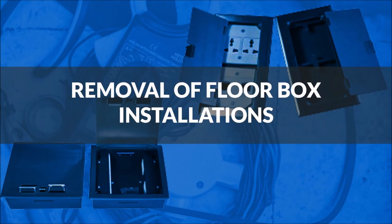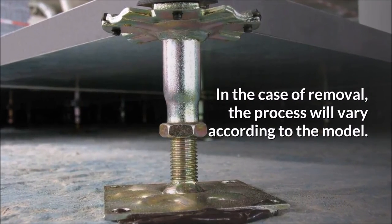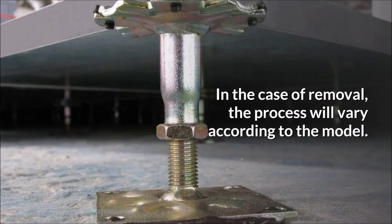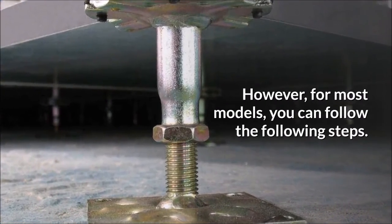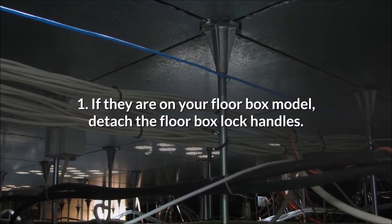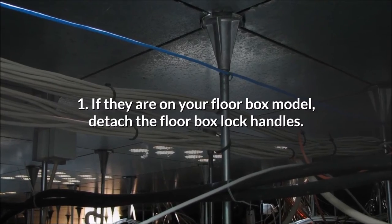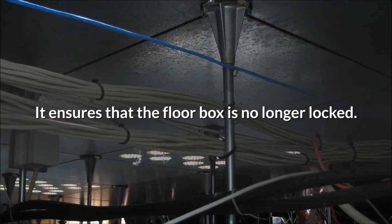Removal of floor box installations. In the case of removal, the process will vary according to the model. However, for most models, you can follow the following steps: If they are on your floor box model, detach the floor box lock handles. It ensures that the floor box is no longer locked. Pull the lid to open an area.